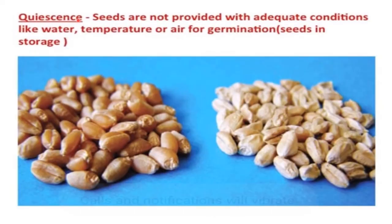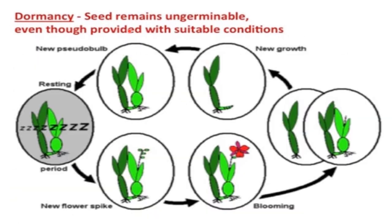Quiescence: seeds are not provided with adequate conditions like water, temperature, or air for germination — that is seeds in storage form. Dormancy: seeds remain un-germinable even when provided with suitable conditions; this is called dormancy.